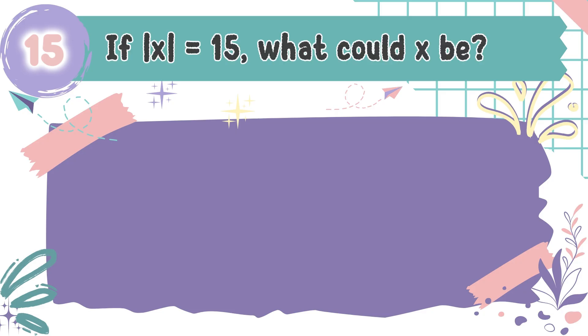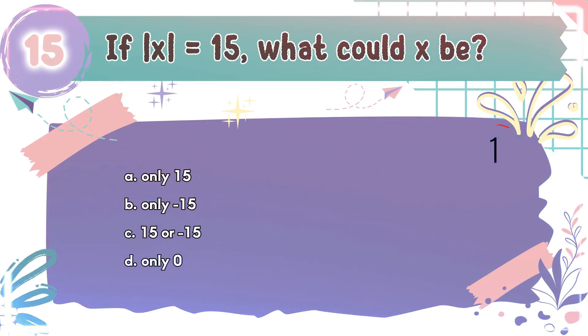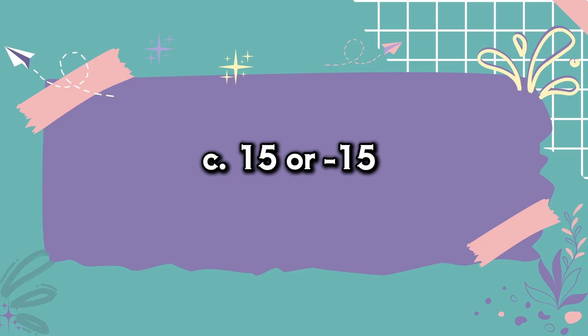Question number 15: If the absolute value of X equals 15, what could X be? The choices are A. Only 15, B. Only negative 15, C. 15 or negative 15, D. Only 0. The correct answer is C. 15 or negative 15. Two numbers have an absolute value of 15 — the number 15 itself and its opposite, negative 15.